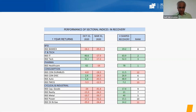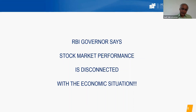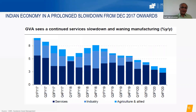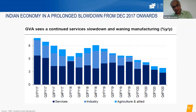To understand why not all sectors have recovered equally, and how to think about investment allocation, we need to deep-dive into the economic situation. The RBI governor has said stock market performance is disconnected from the economic situation. Is that right, and what do we read into it? First, this chart shows India's GDP from Q1 2017 to just before the COVID crisis in Q4 2020. The Indian economy had already been on a slowdown from Q4 2018 — precisely from December 2017 — across services, industry, and agriculture.